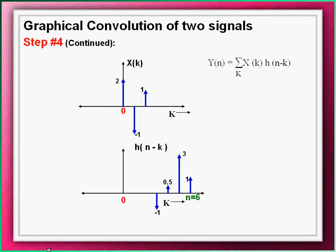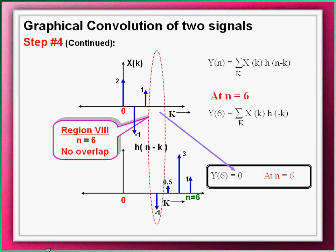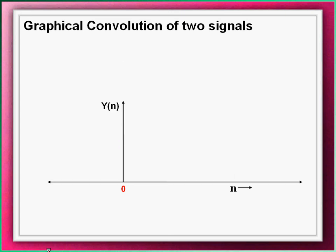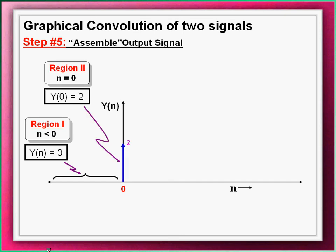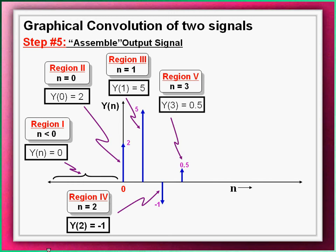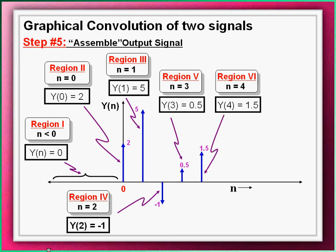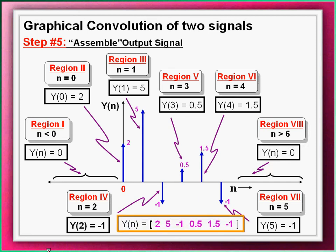Finally, with the next sweep of the signal, no overlap is present between the two signals, indicating the termination of the process and the convolution result being zero. The last step is to assemble all the output values to get the resultant output signal y[n]. For n less than zero the result is zero; at n=0 it is two; at n=1 it is five; at n=2 it is minus one; at n=3 it is 0.5; at n=4 it is 1.5; at n=5 it is minus one; and for n greater than six the result is zero.